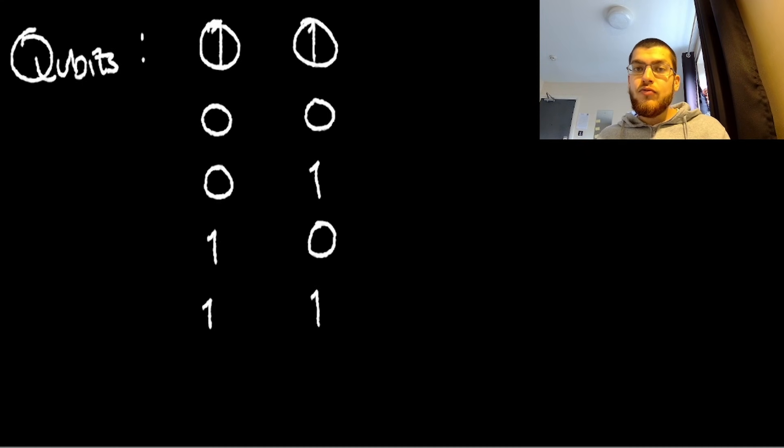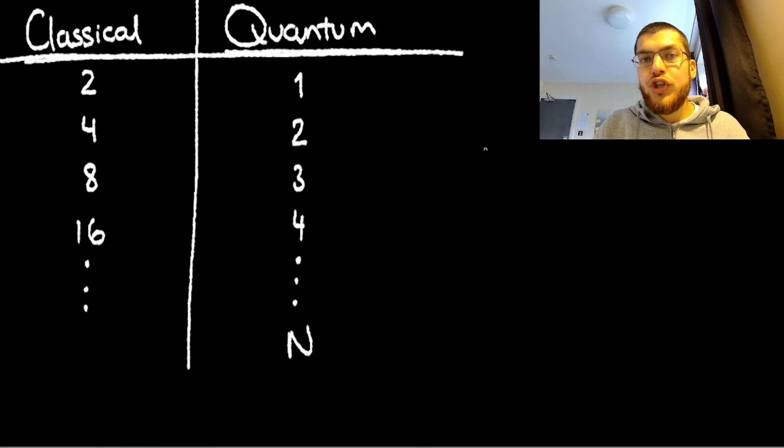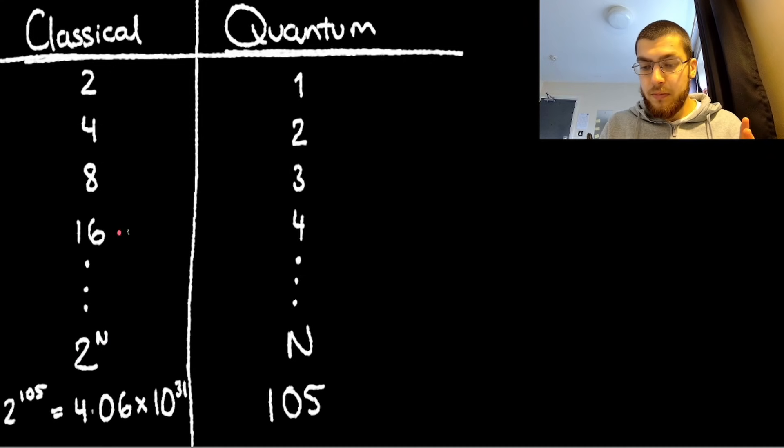And if you have two qubits, they can represent all four possible combinations of two classical bits simultaneously. So in general, if you have n qubits, they can represent a superposition of two to the n classical bits. For small numbers, this doesn't make much of a difference.